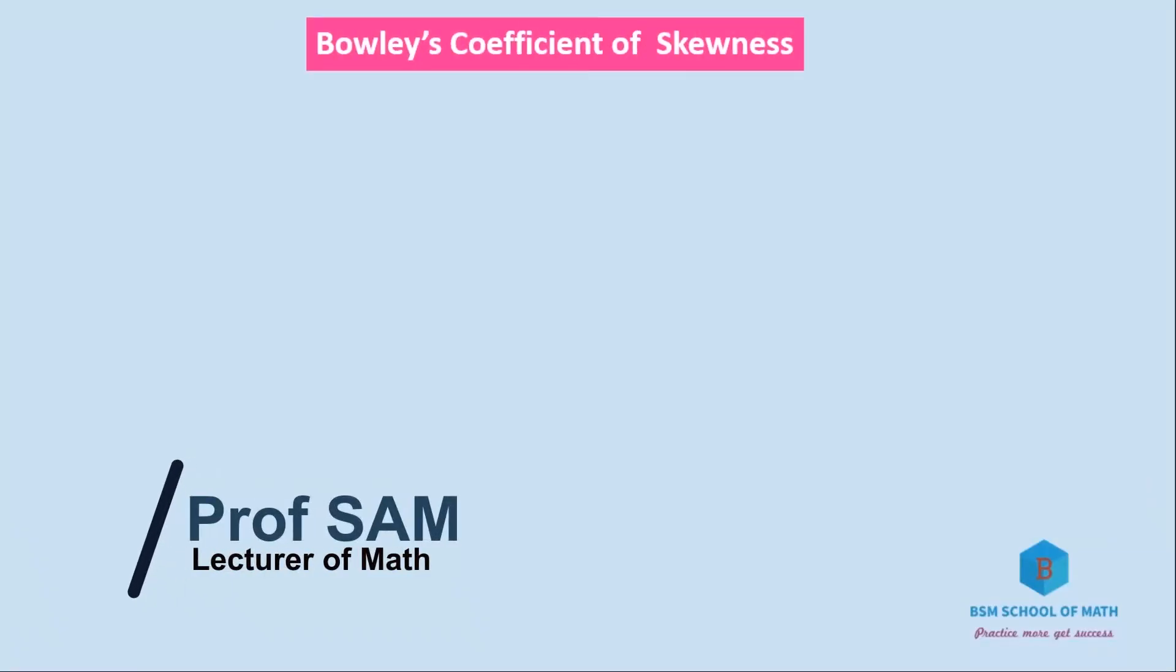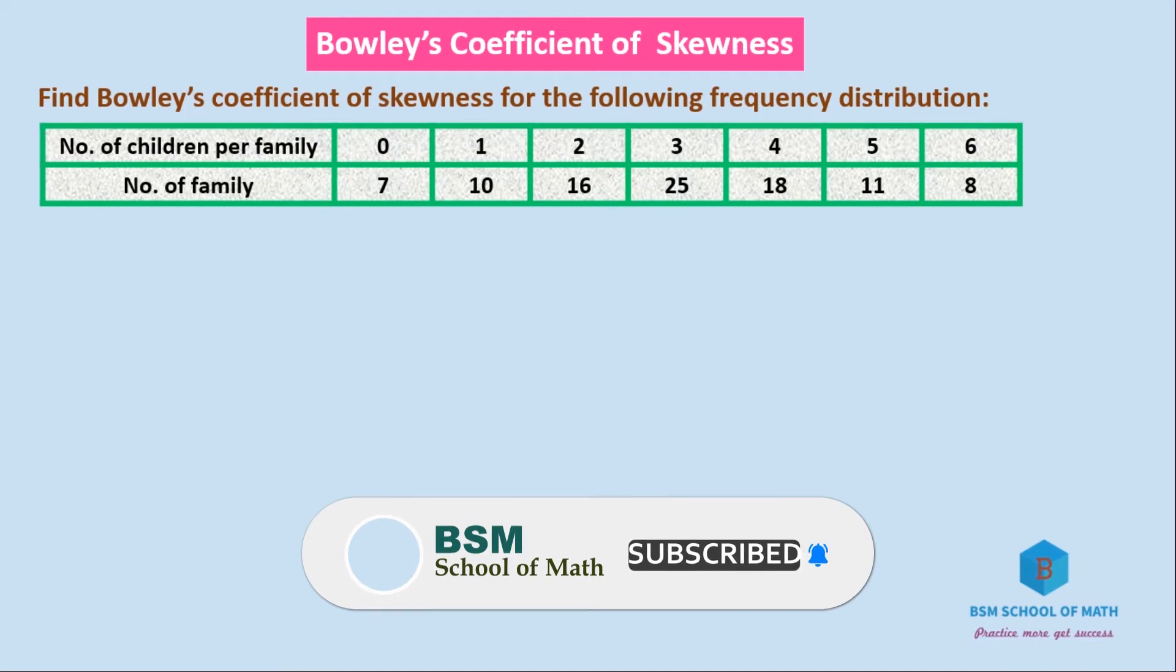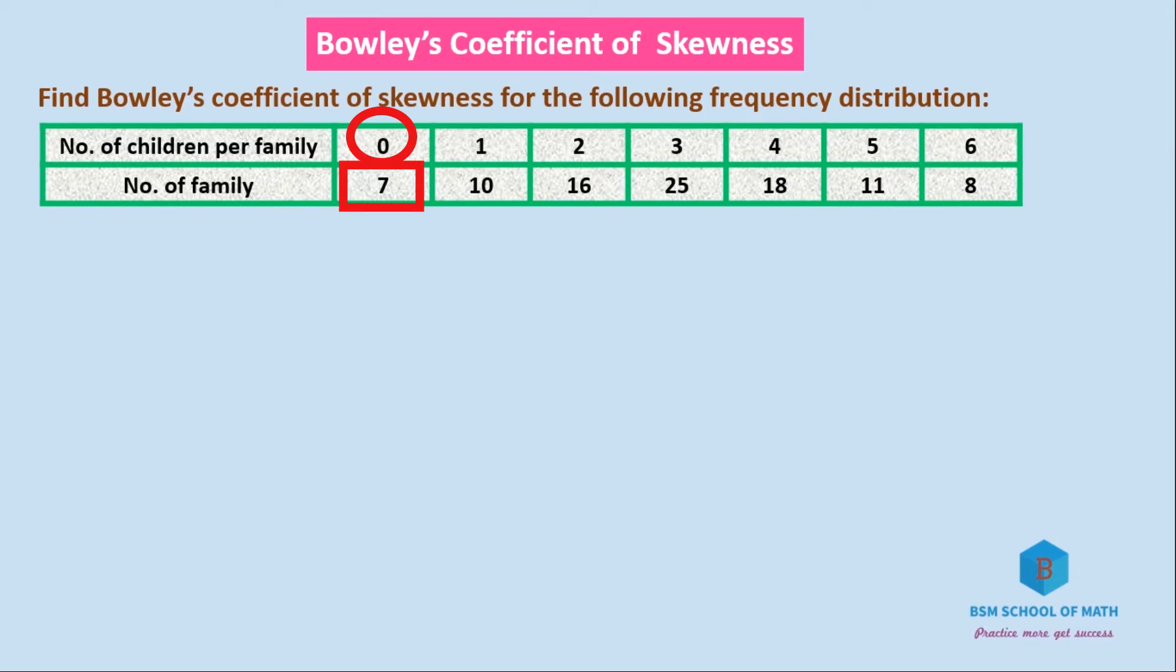Hello and welcome, this is Sam from BSM School of Math. Today we're covering Bowley's coefficient of skewness based on quartile and median. Find Bowley's coefficient of skewness for the following frequency distribution: number of children per family. Seven families have no children, ten families have one child each, sixteen families have two children each, and 25 families have three children each.